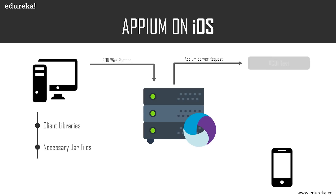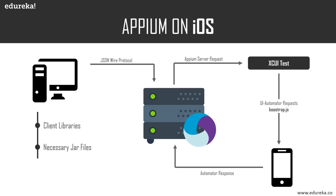After receiving the desired capabilities, the Appium server sends a server request to the XCUITest API, which in turn uses the bootstrap.js file. The bootstrap.js file runs on the iOS machine — which could be a simulator, emulator, or real device — and performs the actions on the application being tested. After execution, the client sends back the message to the Appium server with log details of the executed command, which are then sent back to the client as server responses and log files. The main difference is that instead of UI Automator, iOS apps use the XCUITest API, and instead of bootstrap.jar, a bootstrap.js file is used.